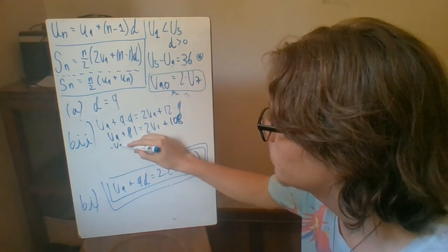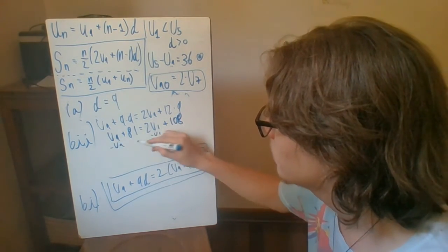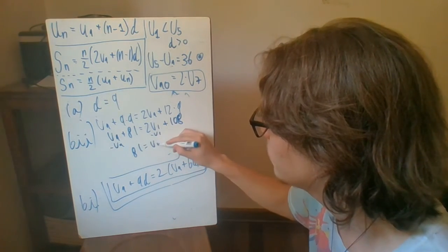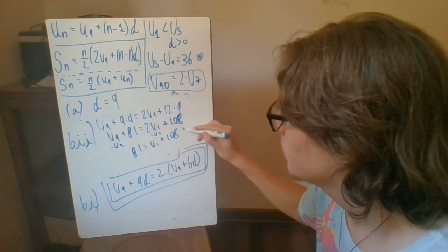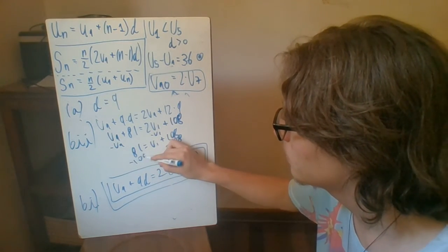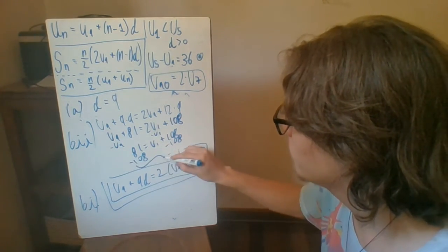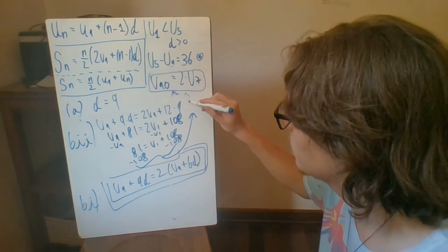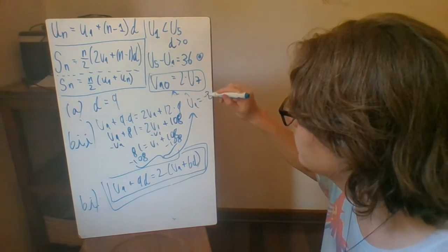We do minus u1 to both sides. So we end up with 81 equals u1 plus 108. We subtract 108 on both sides in order to leave u1 alone. And from this, we end up that u1 necessarily has to be negative 27.